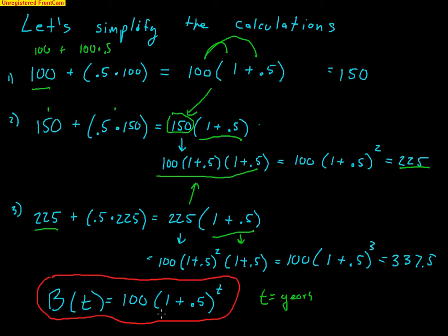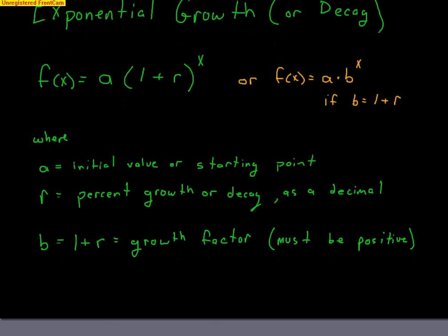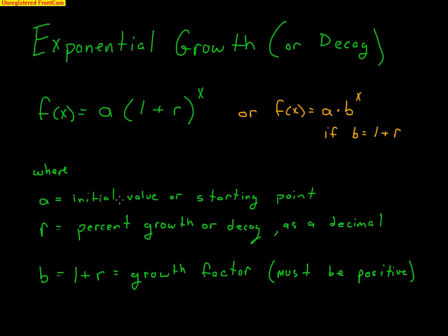I'm starting off with 100, adding (1 plus 0.5) — that's my 50% increase. I always have at least as many stores as the previous year (that's the 1), and I'm increasing by 50%. T is the number of years. This allows us to understand the exponential growth or decay formula: F(x) = A times (1 plus R) raised to X, where A is the initial value and R is the percent growth or decay as a decimal. If you're decaying, it would be a subtraction sign.